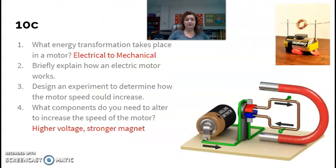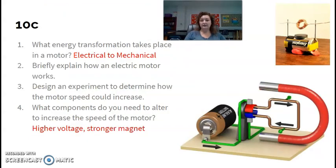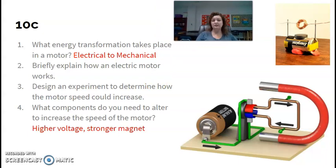So let's go to our questions. And it says, what energy transformation takes place in a motor? Well, it's electrical energy changing into mechanical energy, right? We're taking the electrical energy from our electromagnet and we're converting that into motion, right? Kinetic energy, or in this case, we're saying mechanical energy. That's absolutely correct.